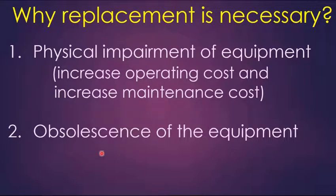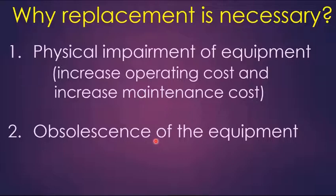The second reason is obsolescence of the equipment. Obsolescence means technological degradation of equipment. Because of the introduction of new and better technology and to meet customer demand, you have to change the equipment. For example, as 4G technology was launched in mobile phones, many people had to change their 3G phone to a 4G phone — because of better internet connectivity, better speed, and to fulfill their requirements. So we also replace machines because of obsolescence.